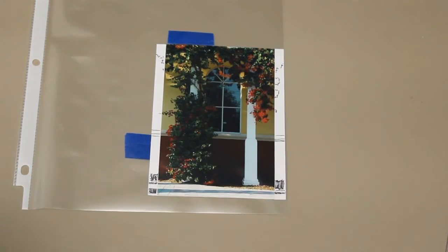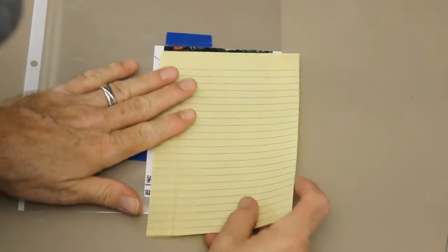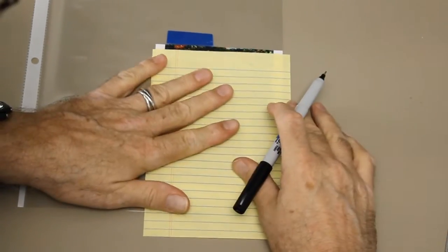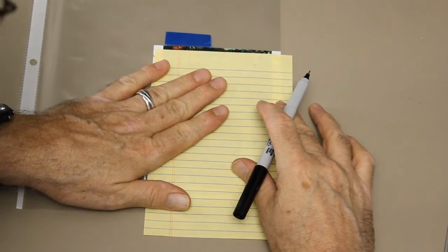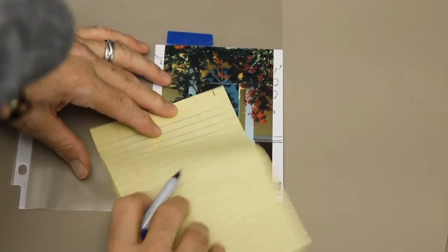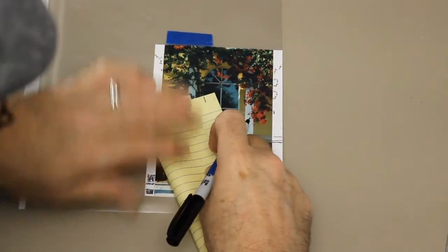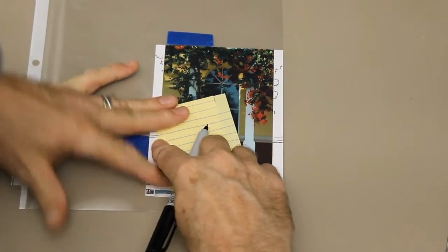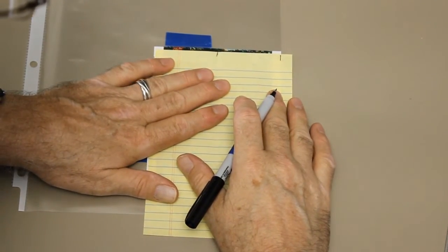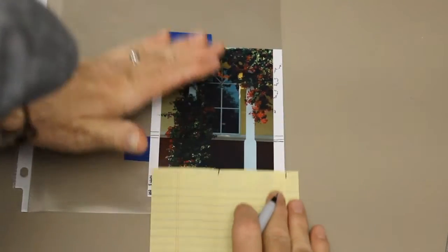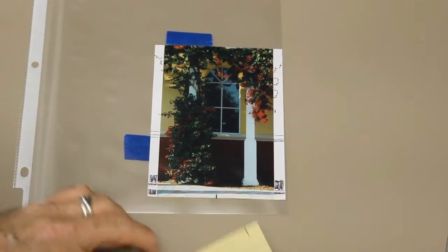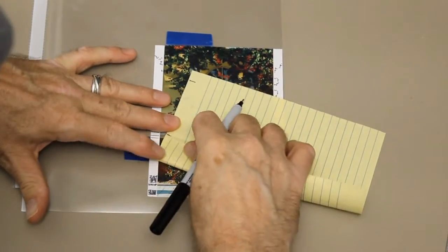I'll be marking on the sheet protector with this ultra-fine Sharpie marker. I've taped my reference, including the paper border, into my sheet protector. To subdivide my reference, I'm going to use another sheet of paper. I'm marking the width of my image. Now I'll fold my paper in half to that mark. This gives me half the width. I'll mark both the top and the bottom. I'll fold my paper again to the halfway mark, which gives me a quarter of the image.